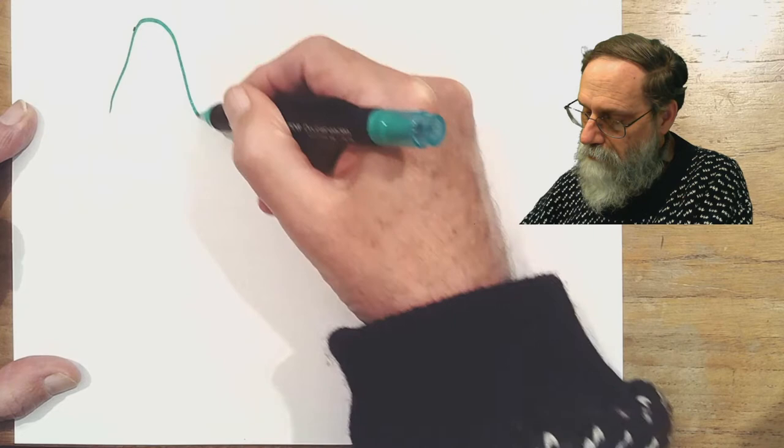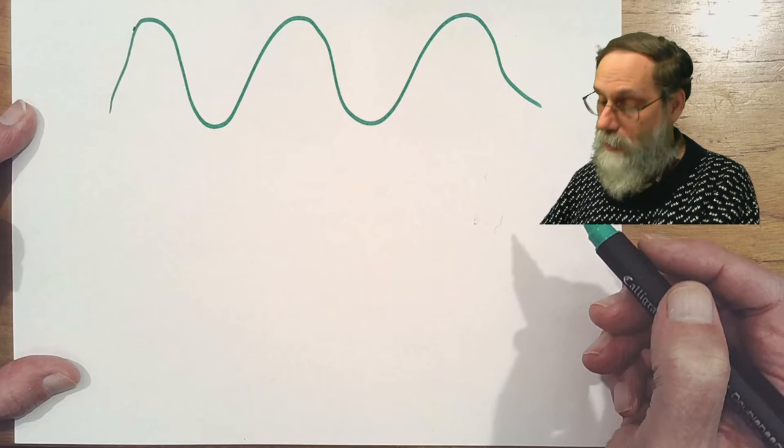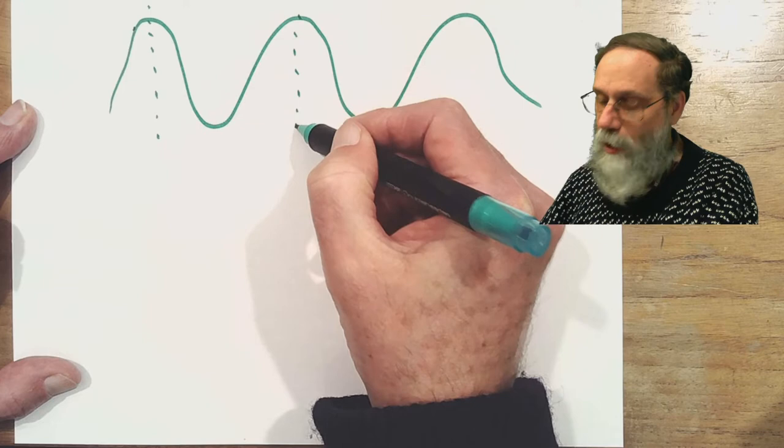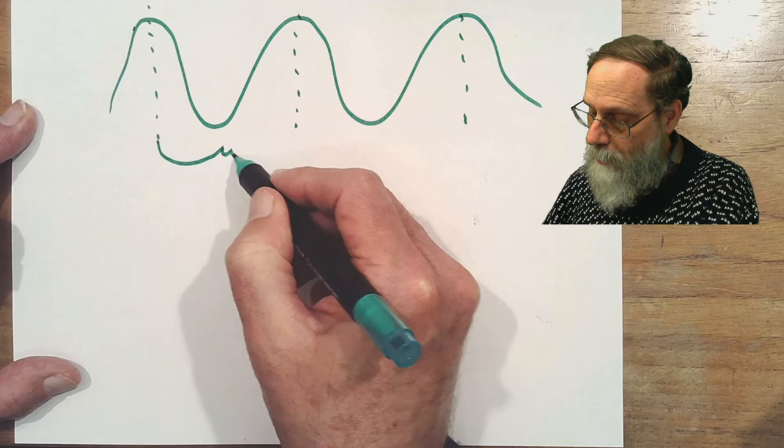We use fence post errors when trying to determine the period or frequency of a signal. Let's say we have a signal that looks like this and we want to find its period. We can look at some feature of the signal, like the peak here, and measure how much time there is for one period.